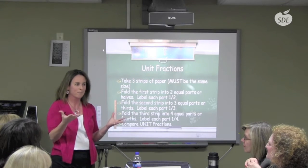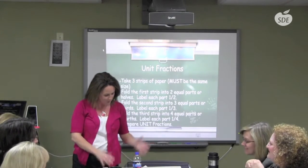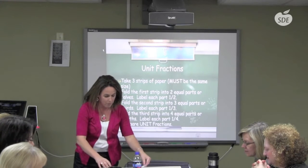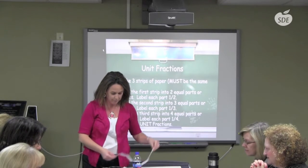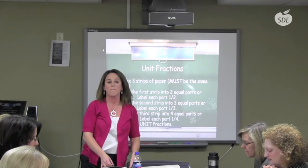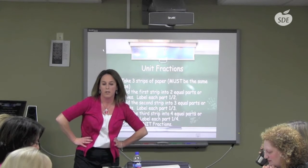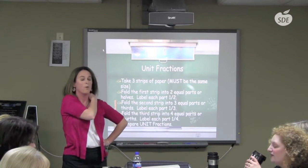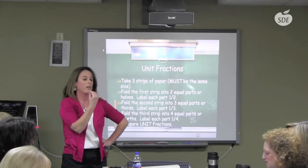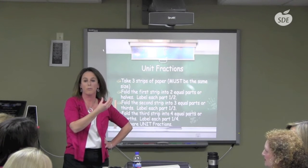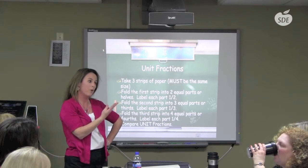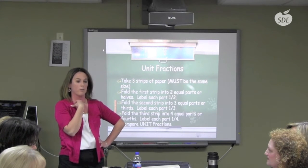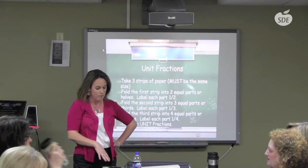Then I have them line the strips up from least to greatest — smallest to largest. The smallest fraction is one fourth, the middle is one third, and the greatest is one half. Most kids, when asked at the beginning which fraction is larger, say one fourth because they see that four in the denominator and think fourths should be larger than halves. This activity gives them a nice visual to see the difference.